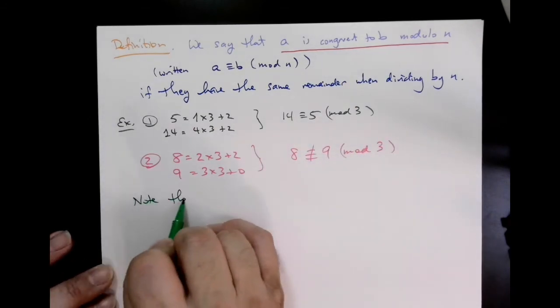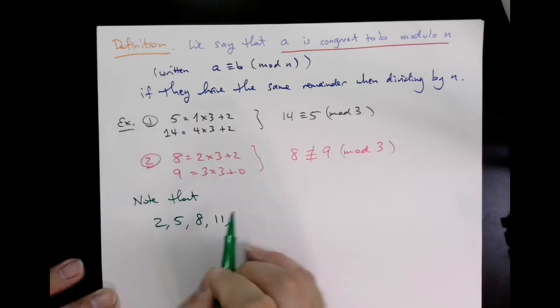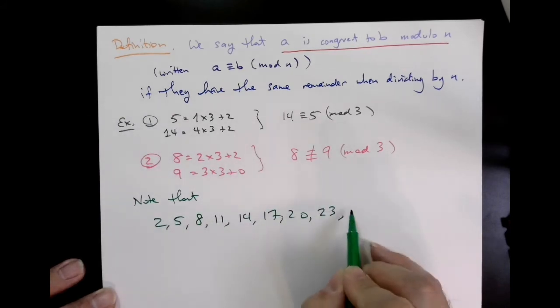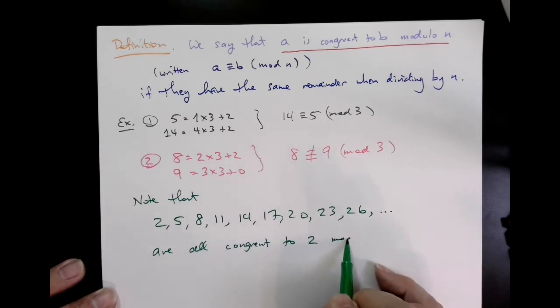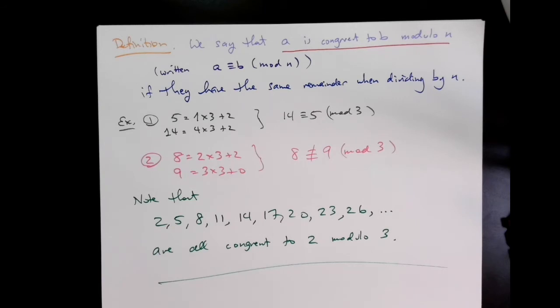Now let's look at this list of numbers: 2, 5, 8, 11, 14, 17, 20, 23, and 26, and keep going. These are all congruent to 2 mod 3. Can you see the pattern? More on this in a bit.